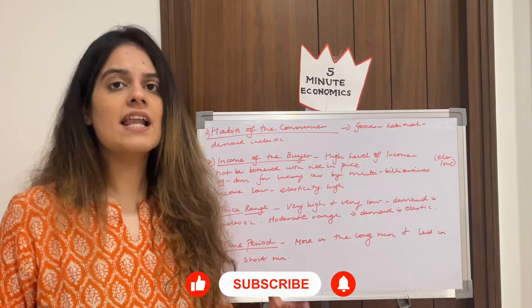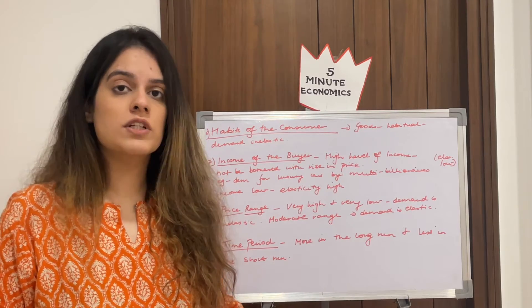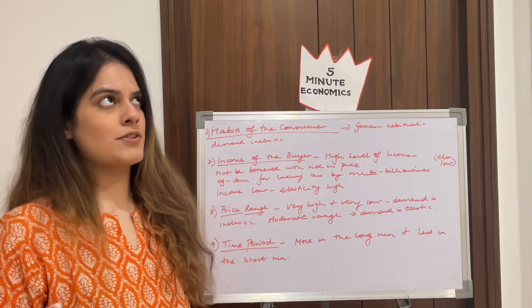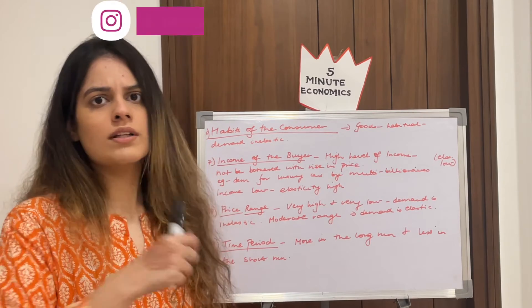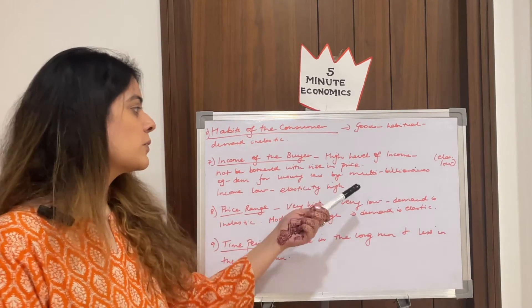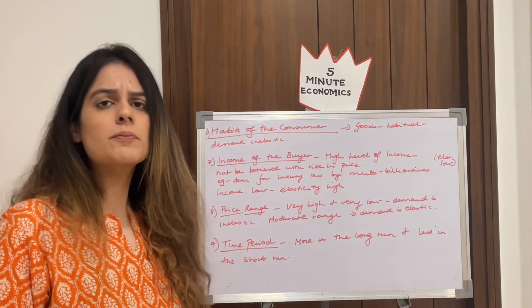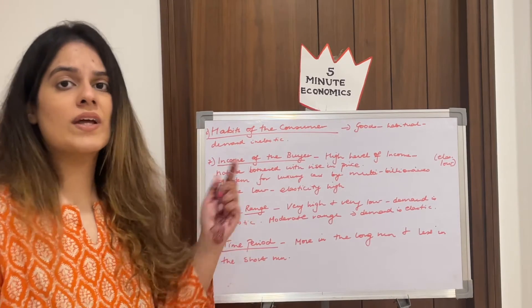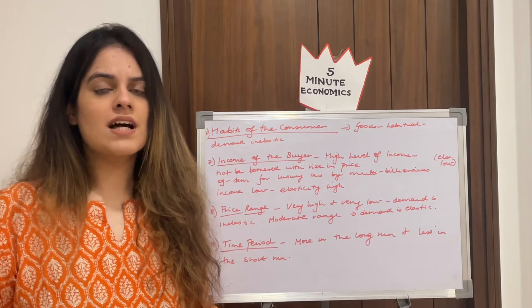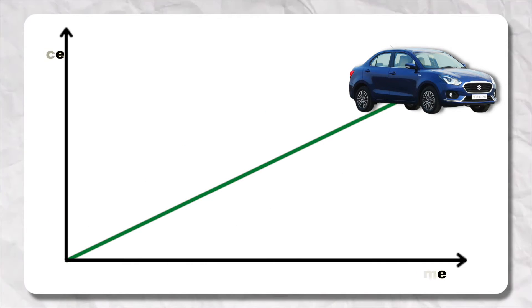Next is the income of the buyer. High-income people are not bothered by a rise in price, so for them elasticity is low — income is high, elasticity is low. For example, a billionaire like Ambani won't stop buying a BMW if its price rises from three crores to three crores twenty lakhs. But for people with low income, elasticity is very high — a middle-class person buying a small Maruti car will definitely be affected if its price rises.